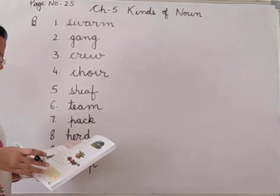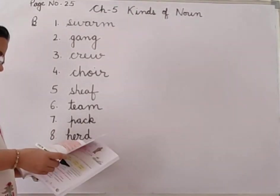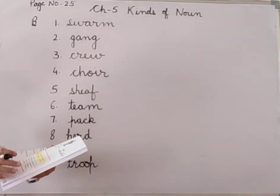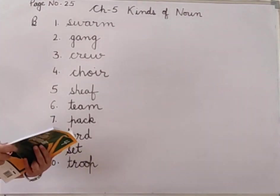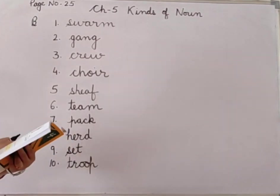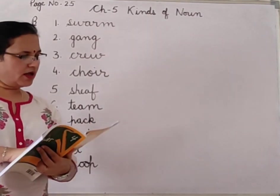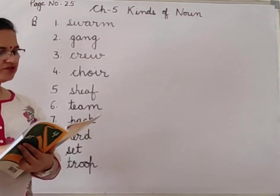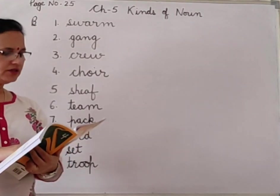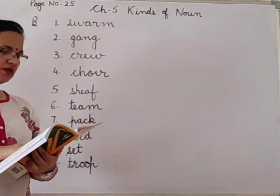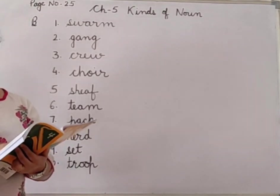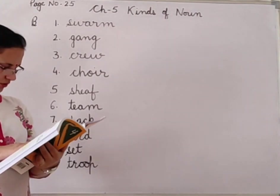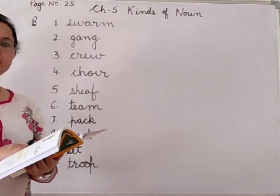Write it down in your book. Fill all these exercises. Now come to next page — page number 26. There is one box with some abstract nouns given: abstract nouns of quality, of action and events, of state, of feelings, of ideas and concepts. You have to learn all these abstract nouns given on page number 26.